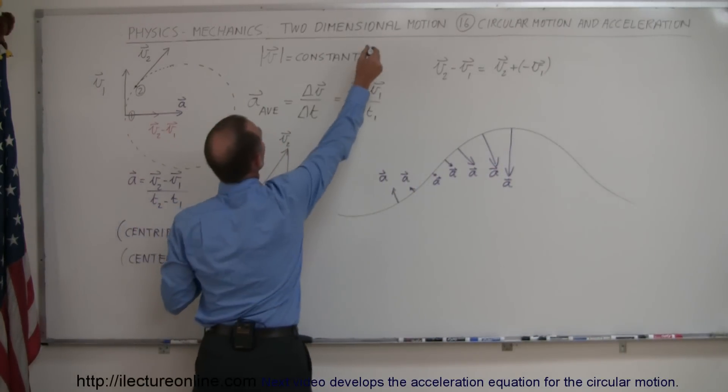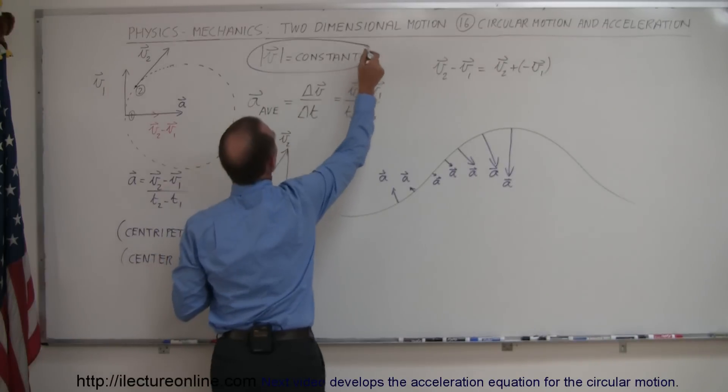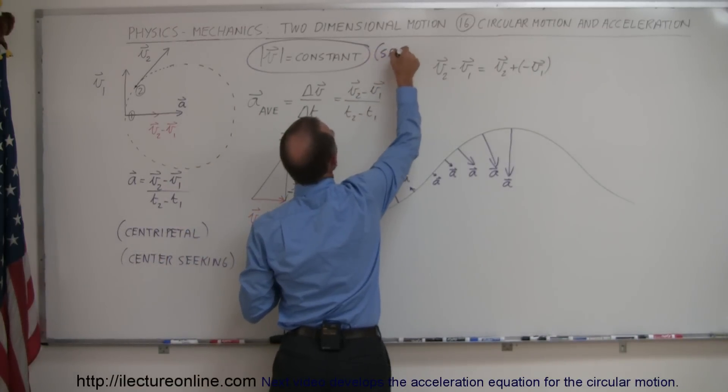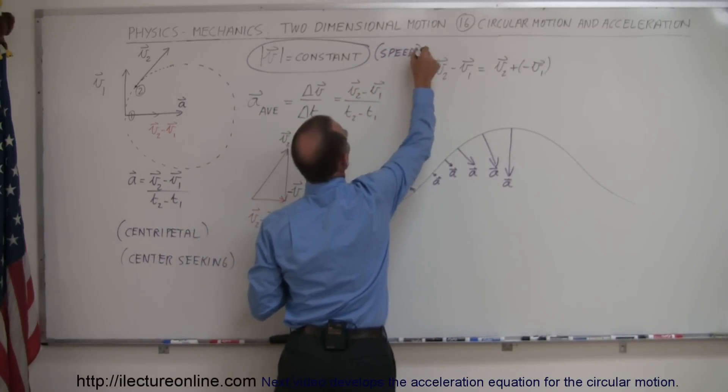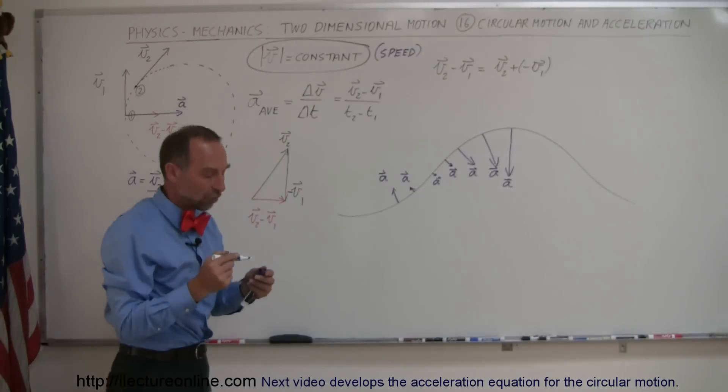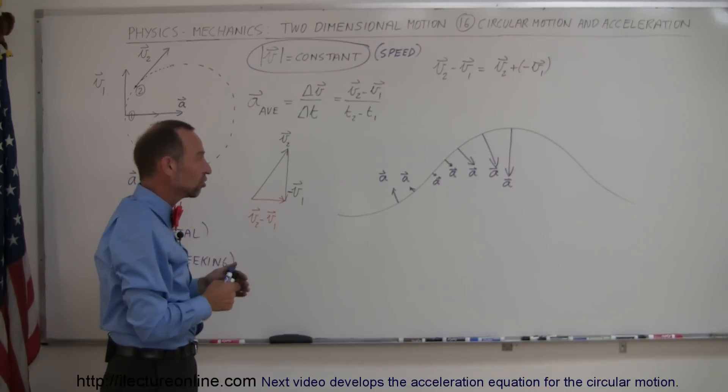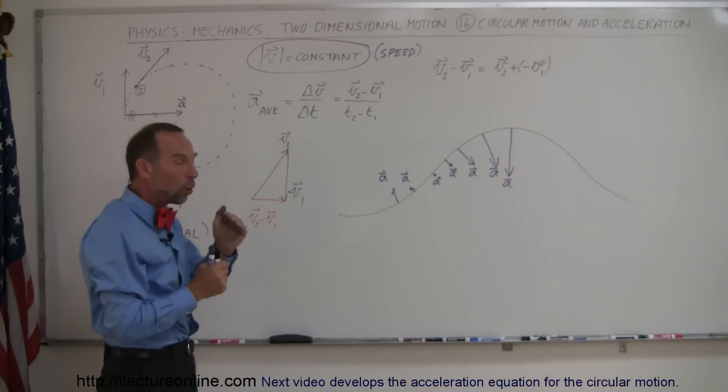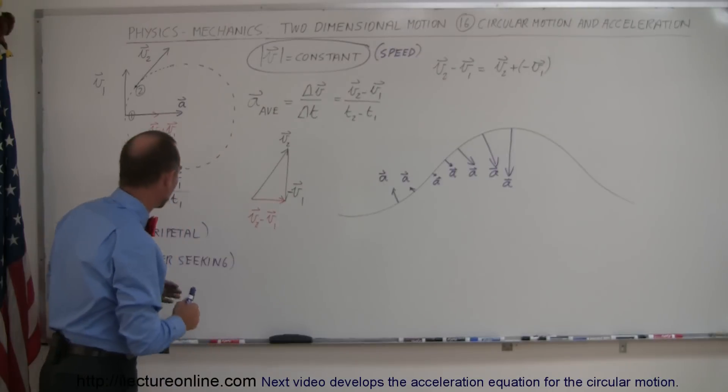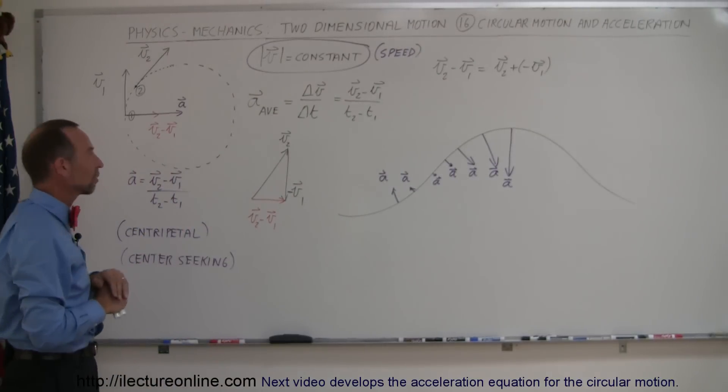And all this while the speed is constant, simply because of the change in the direction. And the faster the direction changes, the larger the acceleration. The slower the direction changes, the smaller the acceleration, but always towards the center of curvature, and that's of course center seeking or centripetal acceleration.